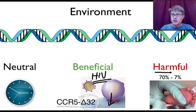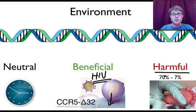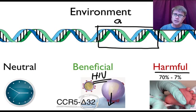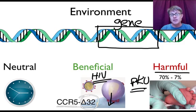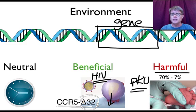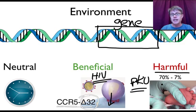However, most mutations are going to be harmful — harmful to that individual, and if in the germ cells, harmful to future generations. If a mutation occurs within a gene, 70% of the time it causes a harmful mutation; if outside the gene, only 7% of the time. An example is PKU, or phenylketonuria — an inherited recessive disease, so you need two copies. People with PKU can't properly metabolize a diet rich in phenylalanine. All babies are tested for this now; before testing, a normal diet was actually harmful to affected infants.